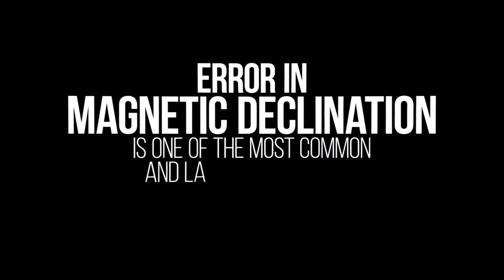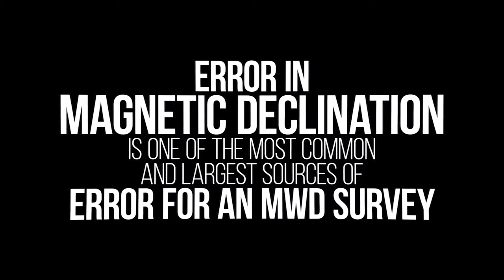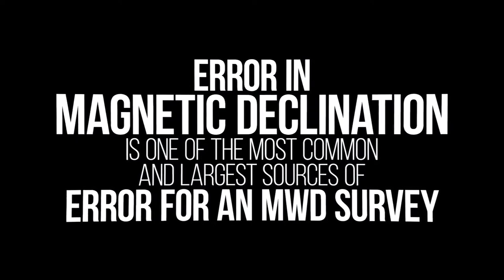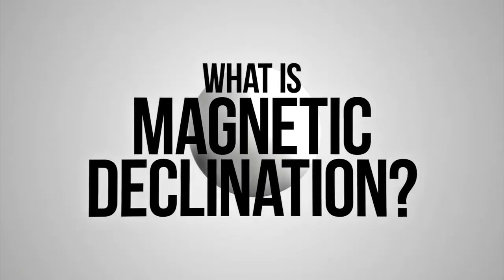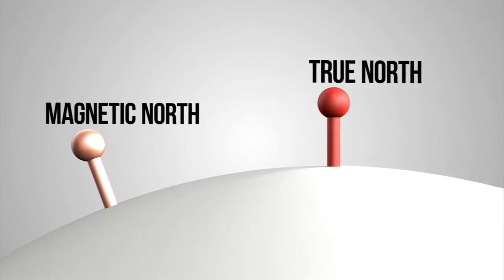Error in magnetic declination is one of the most common and largest sources of error for an MWD survey. So what is magnetic declination? Simply put, magnetic declination is how we relate true north and magnetic north to each other.